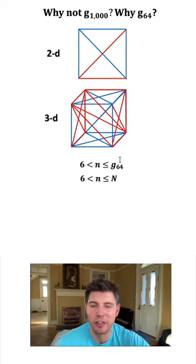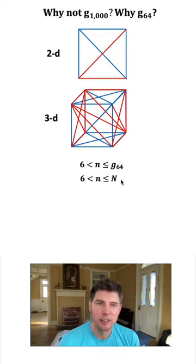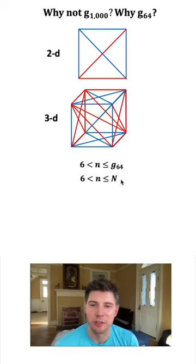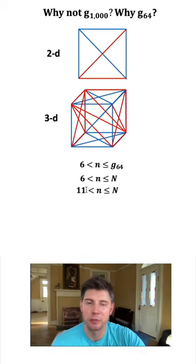And then later on, they discovered a number smaller than Graham's number that still satisfied it. They're moving closer and closer to the first value of n. Then some discovered that all the way up to 11 is okay.